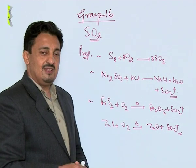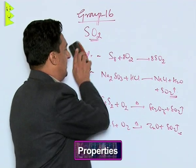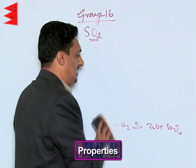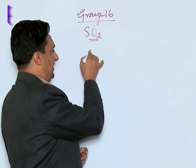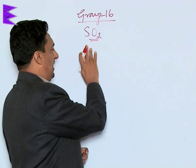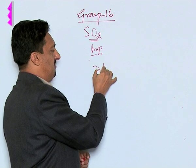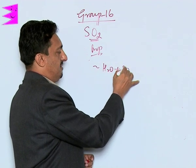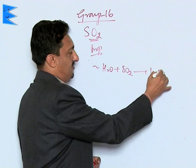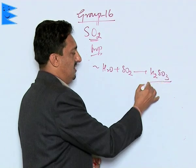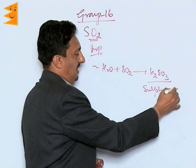Sulphur dioxide is a colorless gas with a pungent odor. It is highly soluble in water, forming the oxy acid H2SO3, which is sulphurous acid.